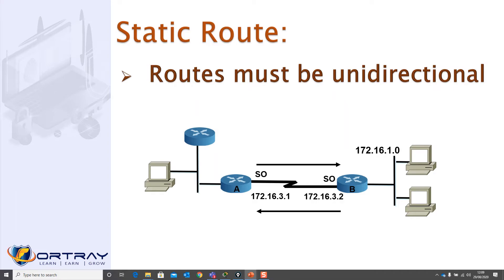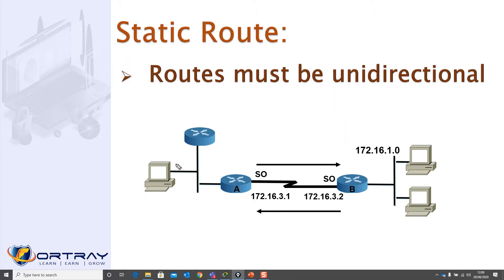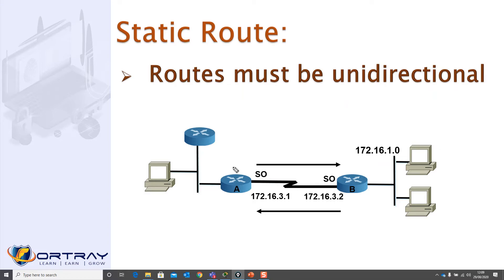When you configure static routes, the route must be unidirectional. For example, if a machine wants to reach 172.16.1.0, that machine's information comes to the router. The router checks its routing table and says: if you want to go to 172.16.1.100, exit from my s0 interface. And as you can see, it is unidirectional.